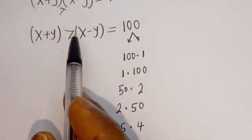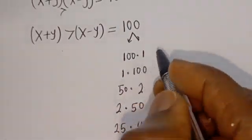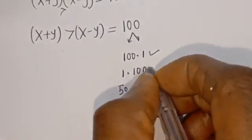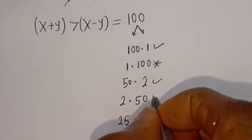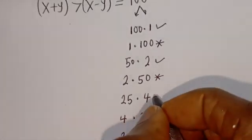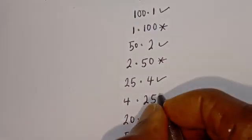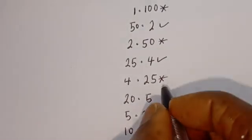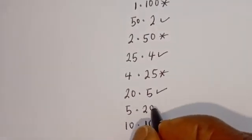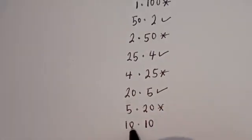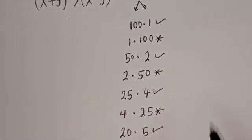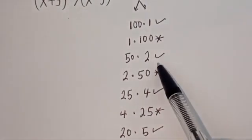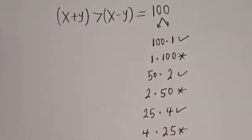Since x plus y must be greater than x minus y: 100 > 1 — accepted; 1 < 100 — rejected; 50 > 2 — accepted; 2 < 50 — rejected; 25 > 4 — accepted; 4 < 25 — rejected; 20 > 5 — accepted; 5 < 20 — rejected; and 10 = 10 — also rejected. So we have four valid cases.